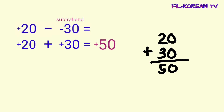The answer is positive 50. The answer for positive 20 minus negative 30 is positive 50. Kapag ang number ay positive, pwede rin hindi nalagyan ng positive sign, dahil ang number na walang sign ay understood na positive number.